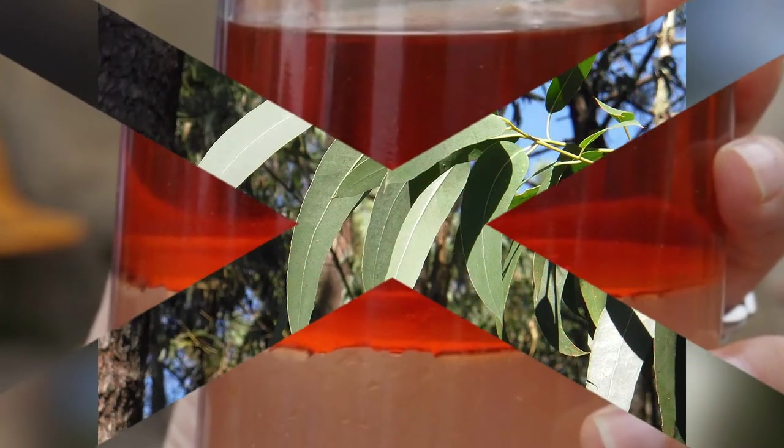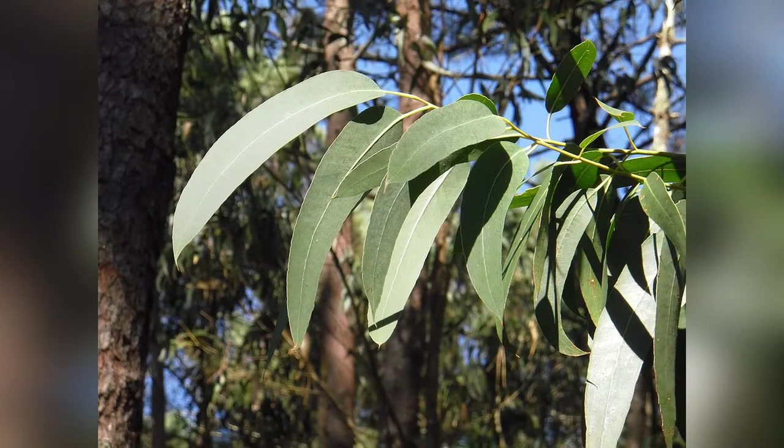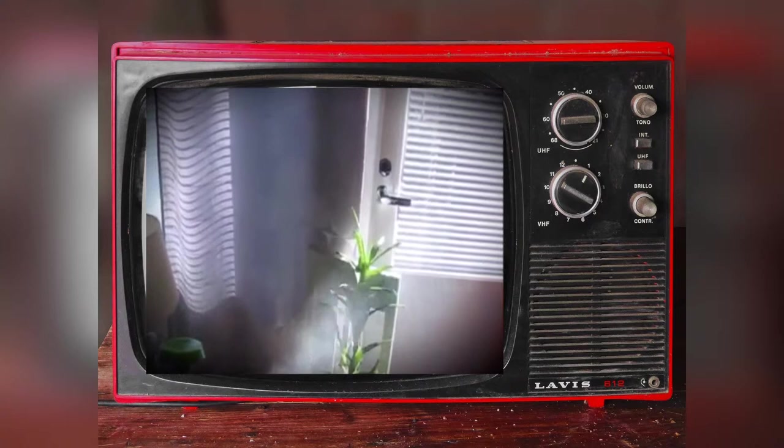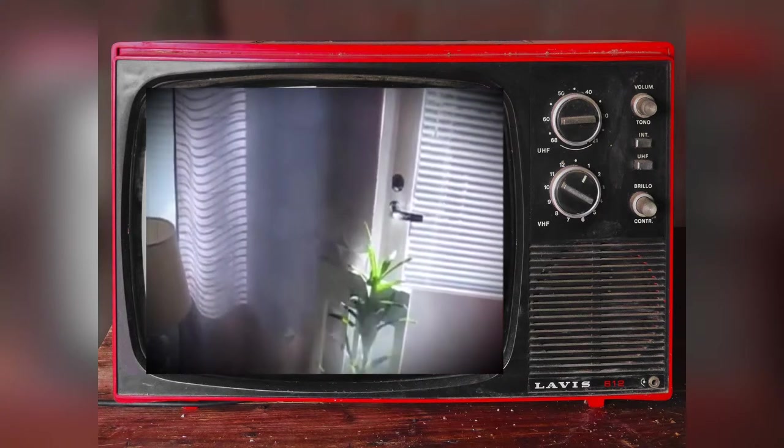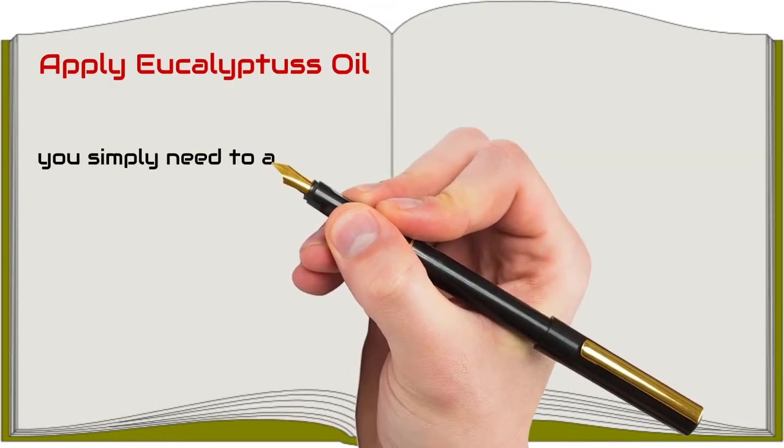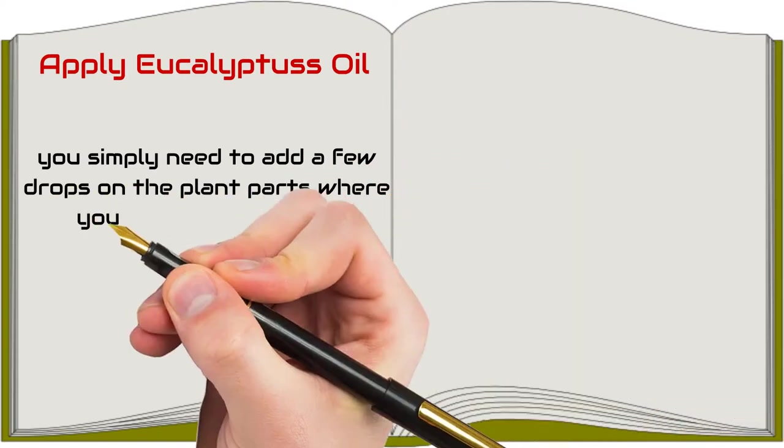Eucalyptus is one of the best essential oils that can be used to ward off pests from your garden. It is a great natural pesticide, especially if your farm is infested with wasps, flies, and bees too. To apply the eucalyptus oil, you simply need to add a few drops on the plant parts where you can see the pests, and before you know it, they will all be gone.